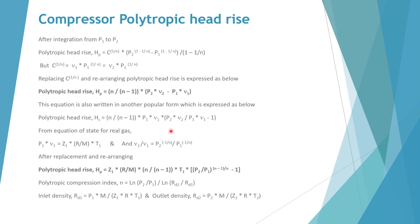Using the standard equation p1 v1 equals z1 r by m t1 and replacing, the polytropic head rise can be written as: Hp equals z1 into r by m into n upon n minus 1 into t1, multiplied by the bracket p2 by p1 to the power n minus 1 upon n, minus 1. The polytropic index n is written as log of p2 by p1, divided by log of rd2 upon rd1, where inlet density rd1 equals p1 into m upon z1 r t1 and outlet density rd2 equals p2 into m upon z2 into r into t2. This is the standard formula for polytropic head rise.